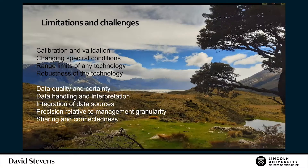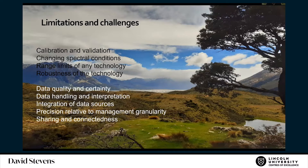I want to talk a little bit about the limitations and challenges, because unless we address these, we are not going to make much progress. The usual list of suspects when we start talking about digital technologies includes calibration of a tool, changing spectral conditions when using photographs, range limits — whether or not you've got access to satellites or a cell phone network. Robustness of the technology — we saw the farmer with his laptop on the bonnet of the ute; that's not going to go very far. That's all standard stuff.